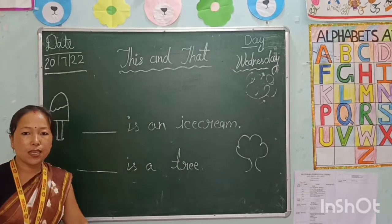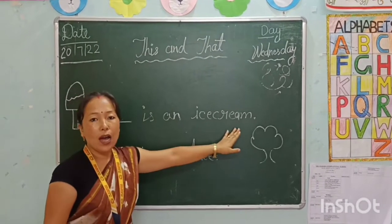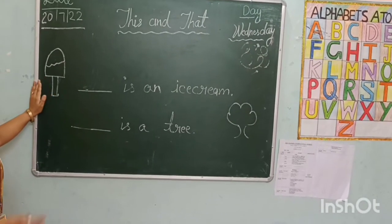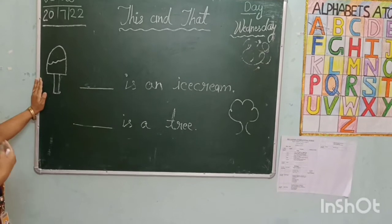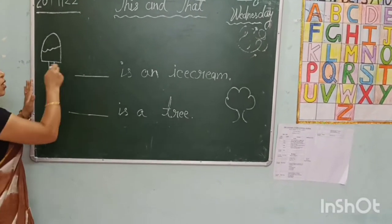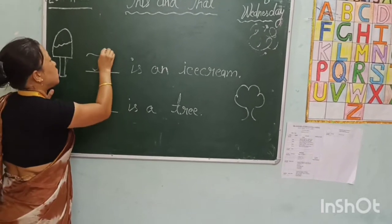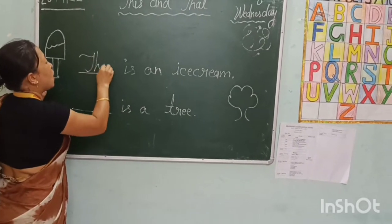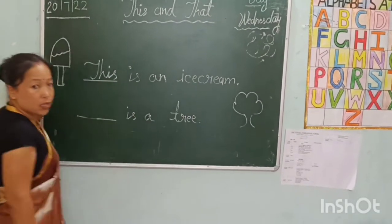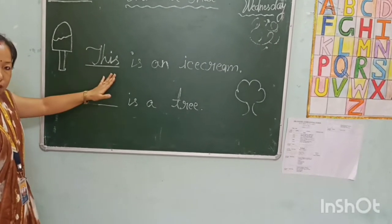Come to the next sentence: dash is an ice cream. It means ice cream is near from me — mere paas hi hai. So we use here this. T-H-I-S. This is an ice cream. Yahan ek ice cream hai.